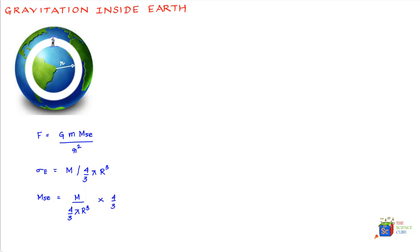So let's go ahead and cancel these terms which are cancelable, and what we get is the mass of smaller Earth MSE can now be written as M into small r cube divided by capital R cube.